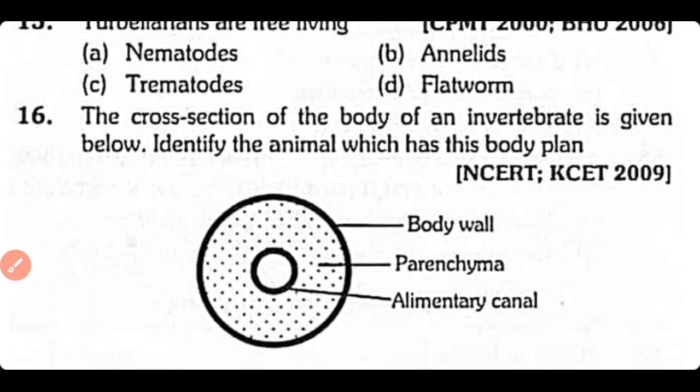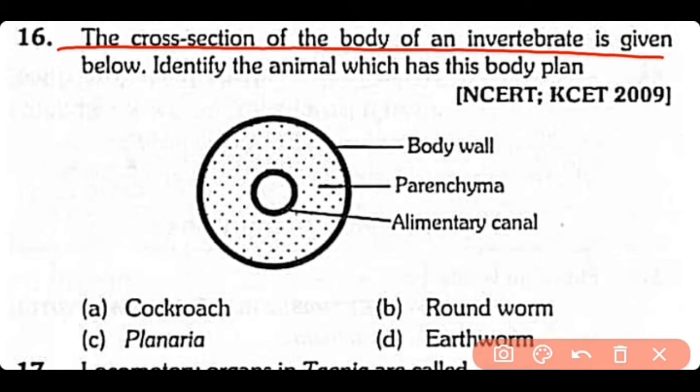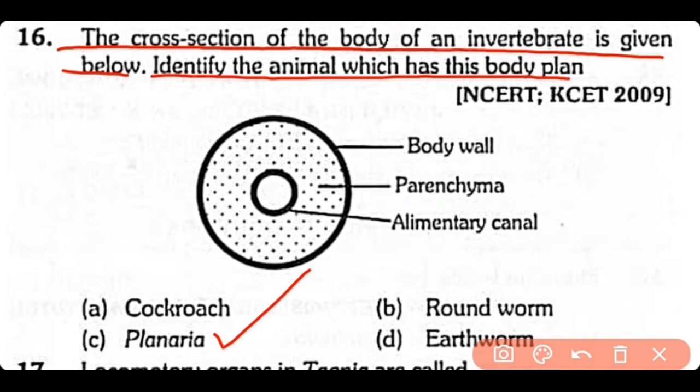Question no.16. The cross-section of the body of an invertebrate is given. Identify the animal which has this body plan. Looking at the figure, there is a body wall with parenchyma cells and an alimentary canal. The correct answer is option C. Planaria has this kind of body plan.